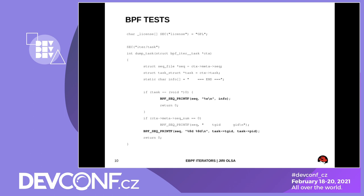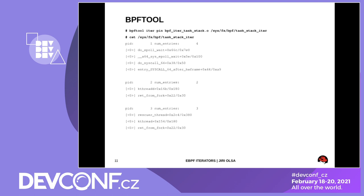If you open one of those files, you will see C code of the BPF program. You can see how to get tasks and retrieve information from them and print it back. This shows you how the iterators are actually used and how they're written.